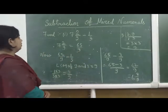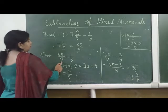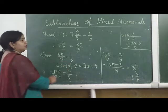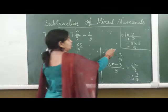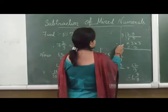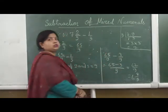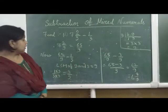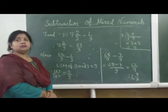Now we will find the LCM of 9 and 3. By the division method, we will get the LCM of 3 and 9, which is 9.